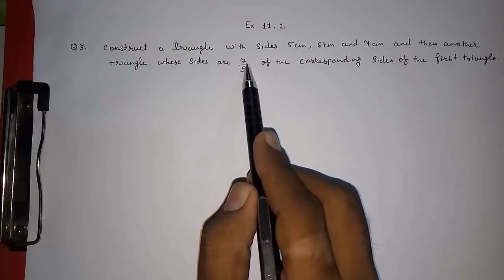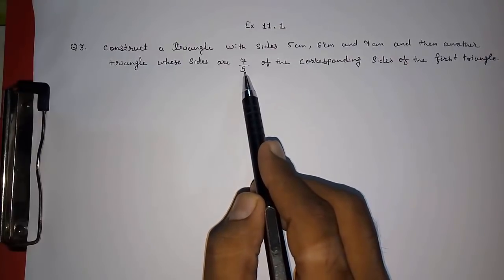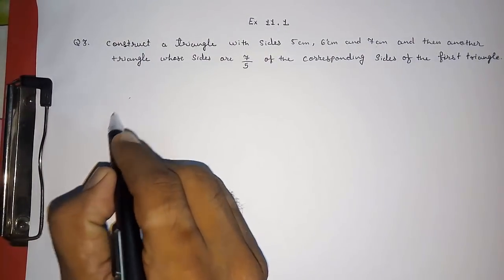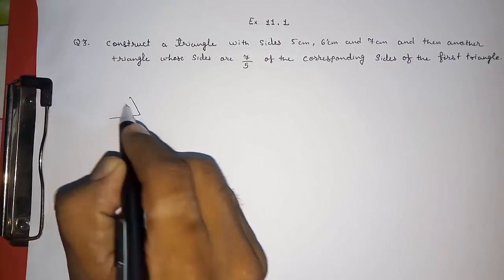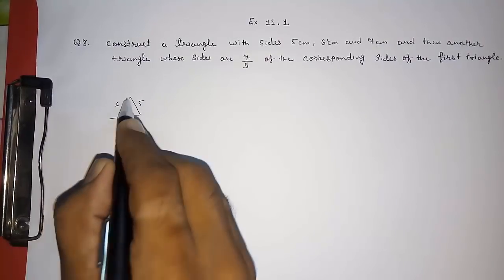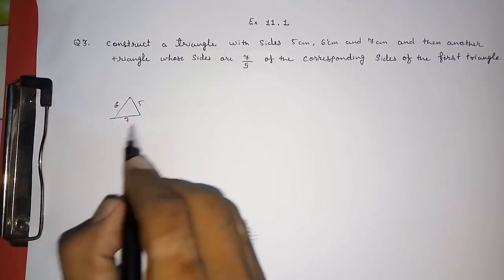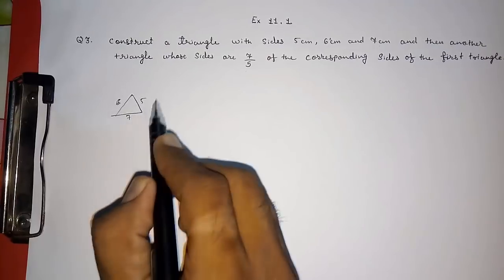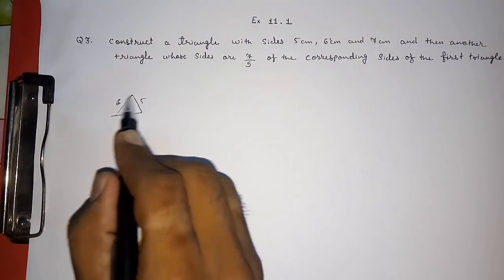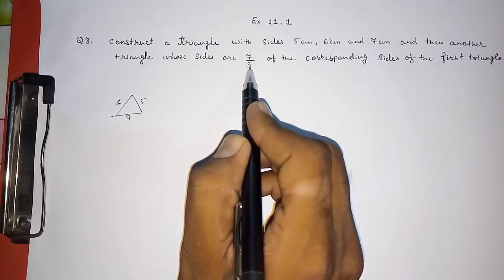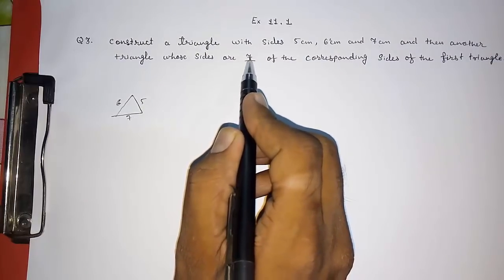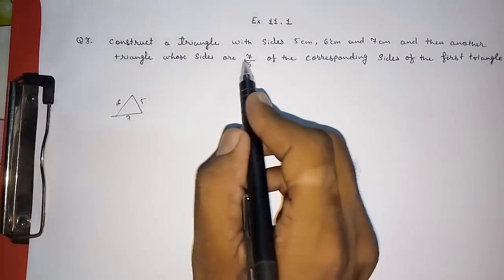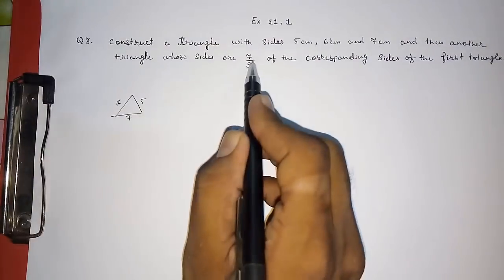First I am drawing a rough triangle with sides 5, 6, and 7. This is the 5-part triangle, and we have to draw a triangle of 7 parts from this. So that triangle will be greater than this triangle — 7 parts is greater than 5 parts. As I told you in my previous video, what is given is always in the denominator, so this is 5 parts and we have to draw 7 parts, meaning it will be greater.